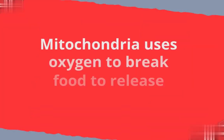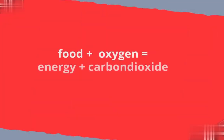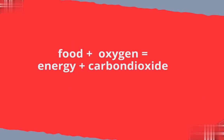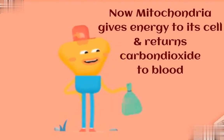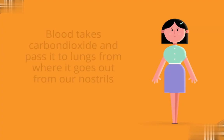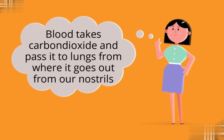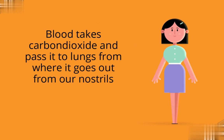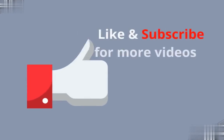Mitochondria uses oxygen to break down food to release energy and carbon dioxide. Food plus oxygen equals energy plus carbon dioxide. Now mitochondria gives energy to itself and returns carbon dioxide to the blood. Blood takes carbon dioxide and passes it to the lungs, from where it goes out through our nostrils. This process is called respiration.